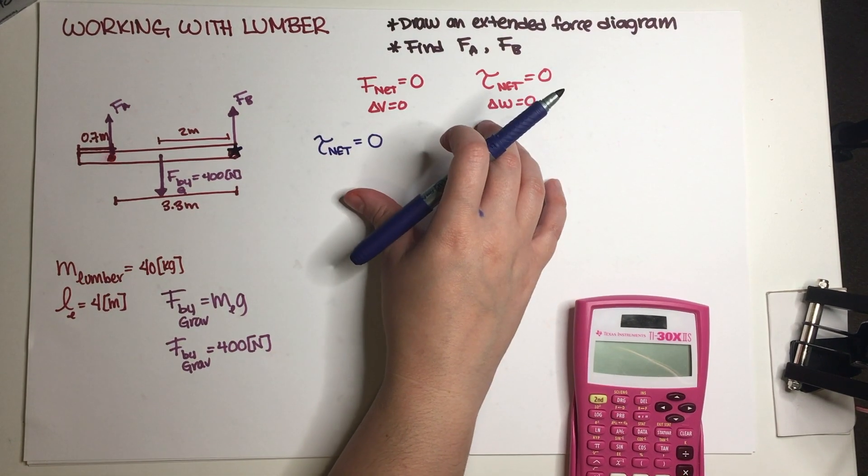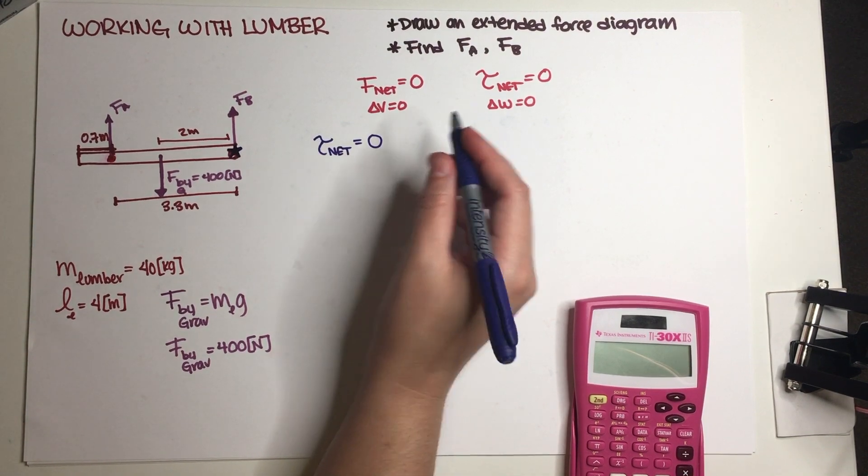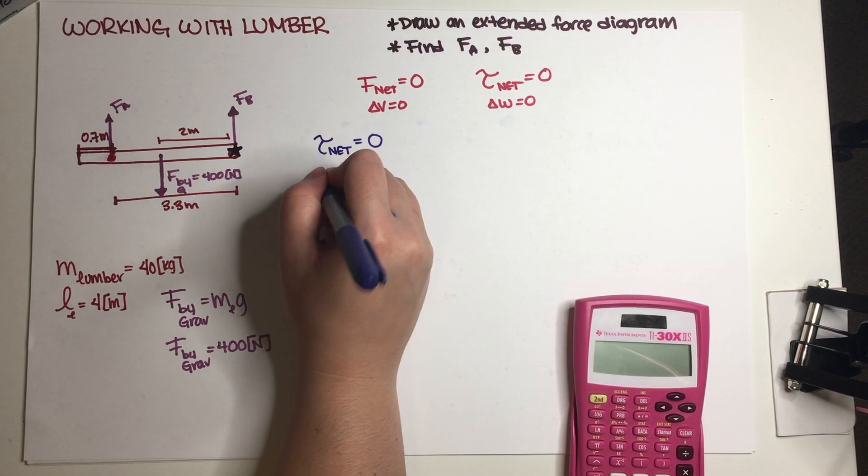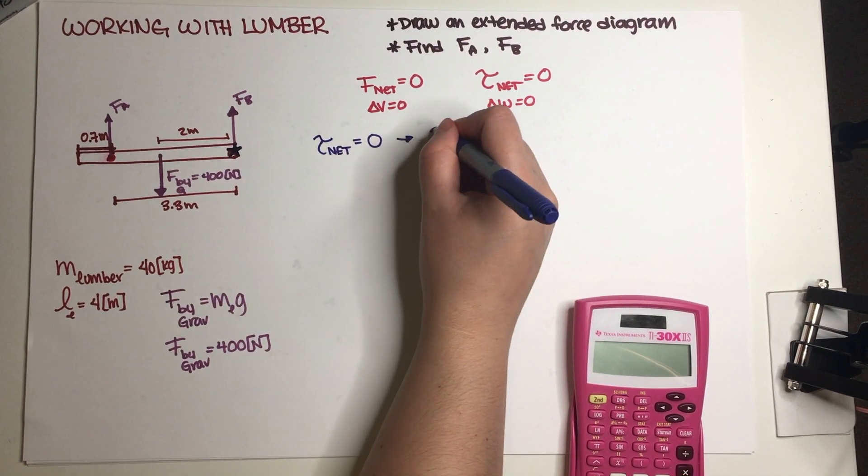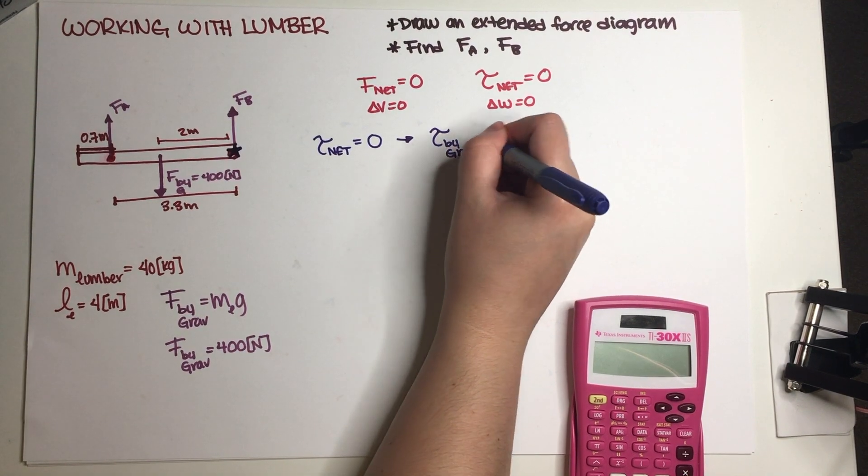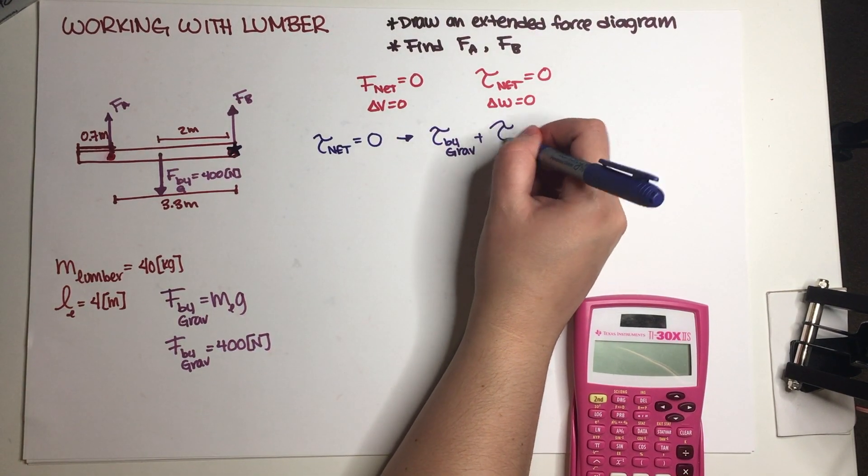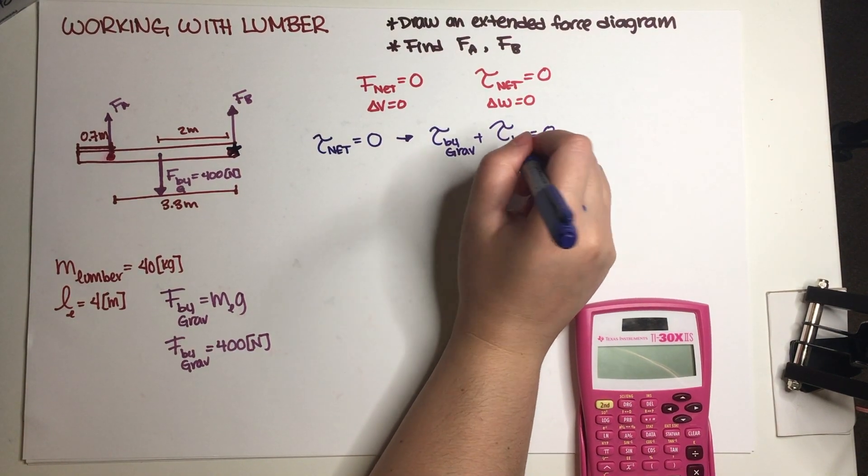Okay, so now let's just rewrite this statement with the two torques that we do have. We have one torque due to gravity, so this means that torque by gravity plus torque by lumberjack A, they have to be equal to zero.